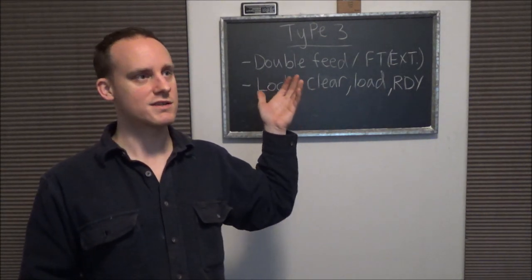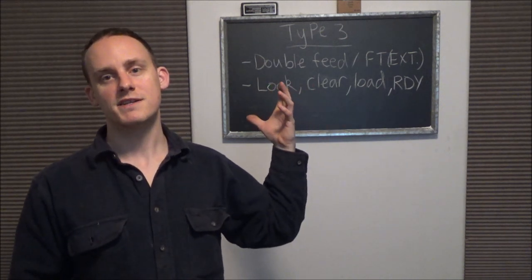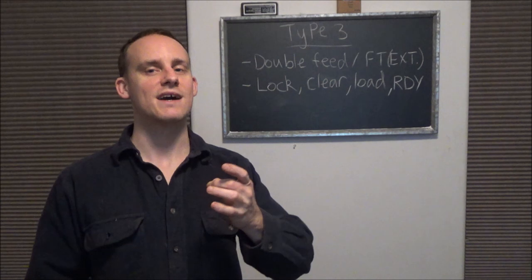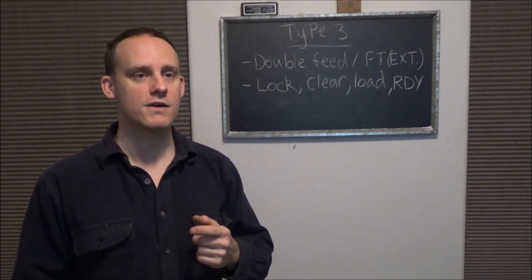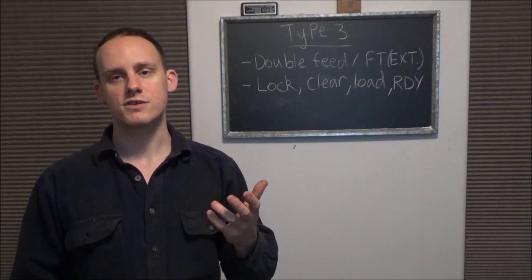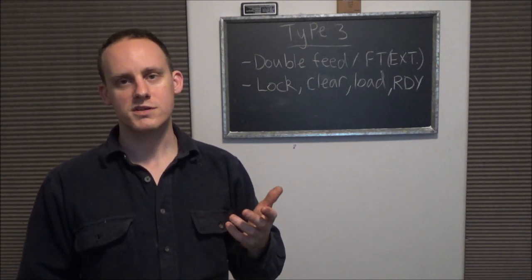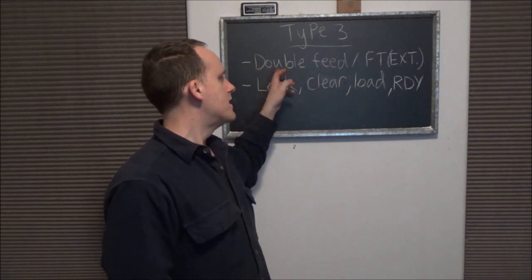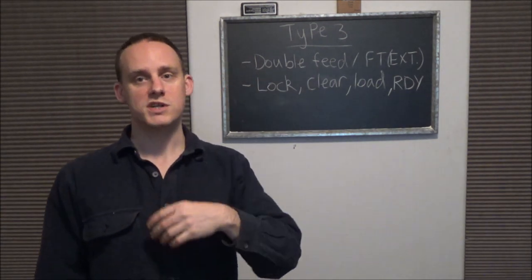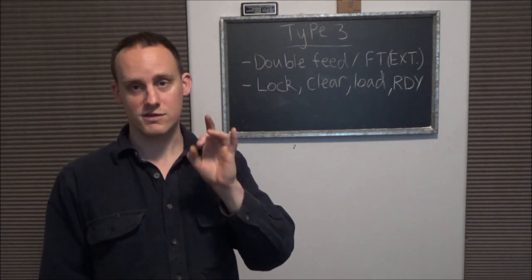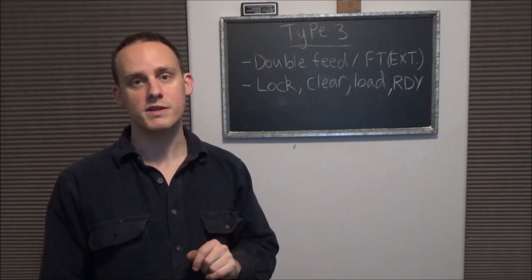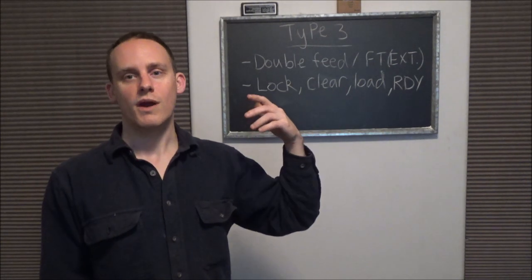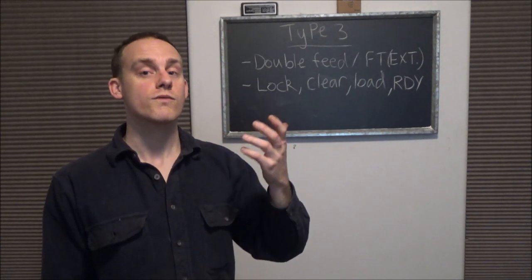What is a Type 3 malfunction? Well, it's considered the worst type because it's going to require remedial action to clear it. And I will tell you right now, there's no such thing as cheating on this. I've seen people try to use the cheat and they actually put themselves in worse positions. It can be in the form of a double feed, which is basically where you have two rounds literally fighting for room in the chamber. You'll see this with 1911s and when you have feed lips that go out or you have an over sprung magazine.